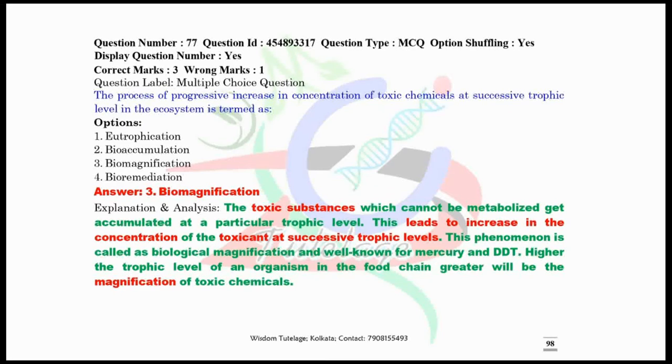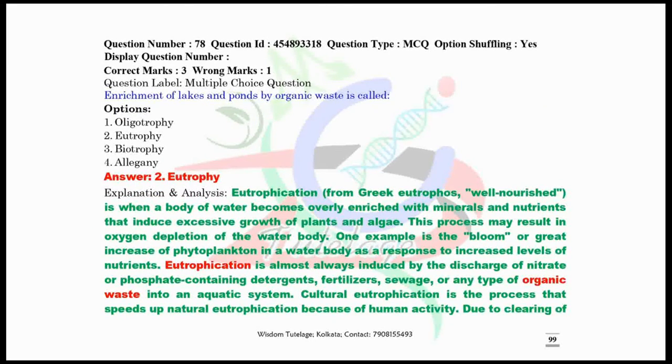Question 77 involves biomagnification. Sometimes DDT-like compounds or mercury-like compounds are the cause of these types of ecological damage like biomagnification. Now question number 78, enrichment of lakes and ponds by organic waste is called eutrophication. The Greek word eutrophos, which means well-nourished, is where this eutrophication or eutrophy came from.